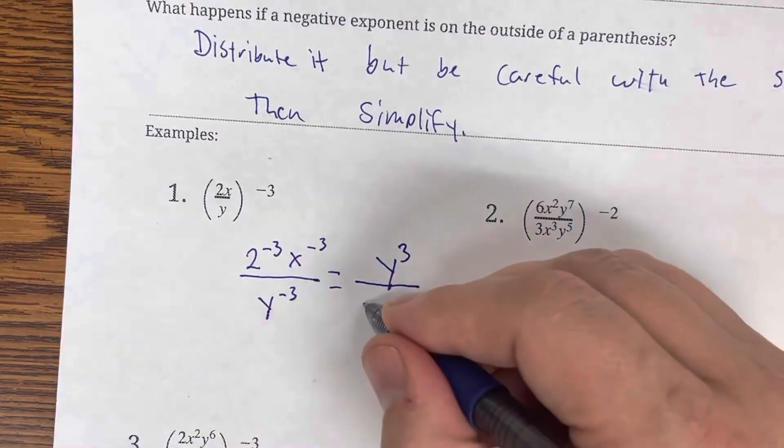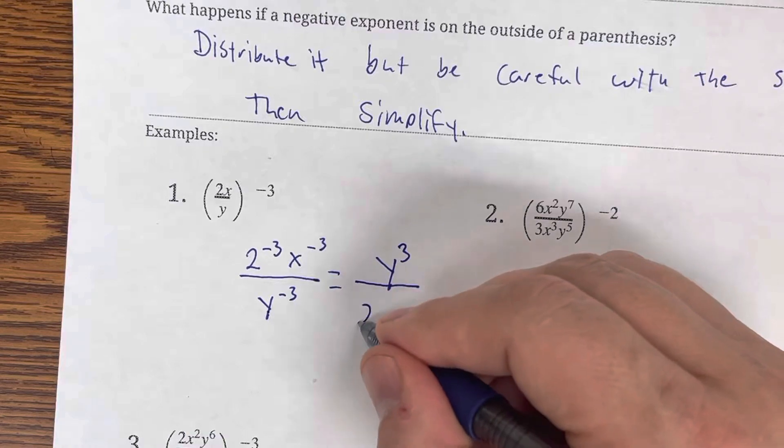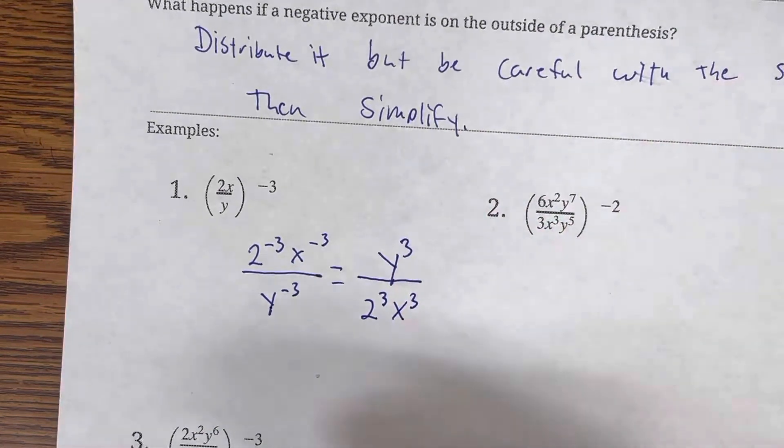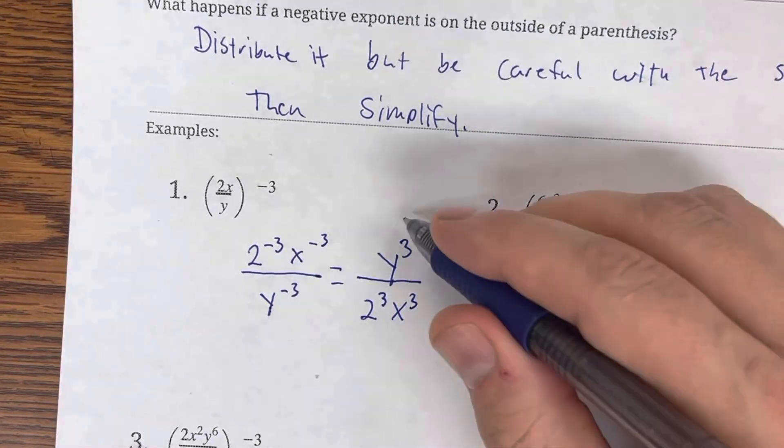Our 2 has to go downstairs, and that's 2 to the 3rd, which is 8. And x to the 3rd also goes downstairs because we cannot keep negative exponents.